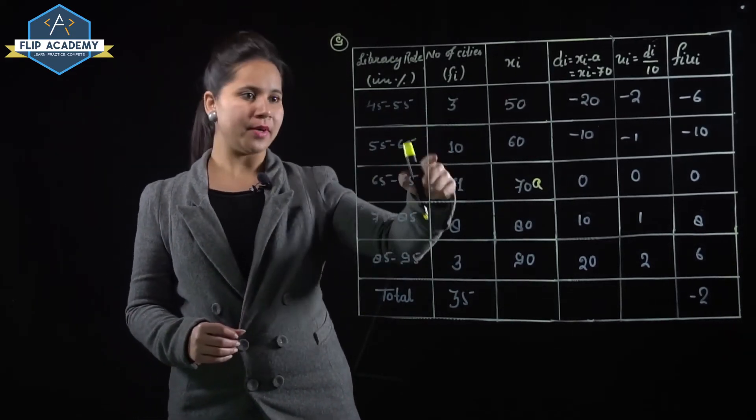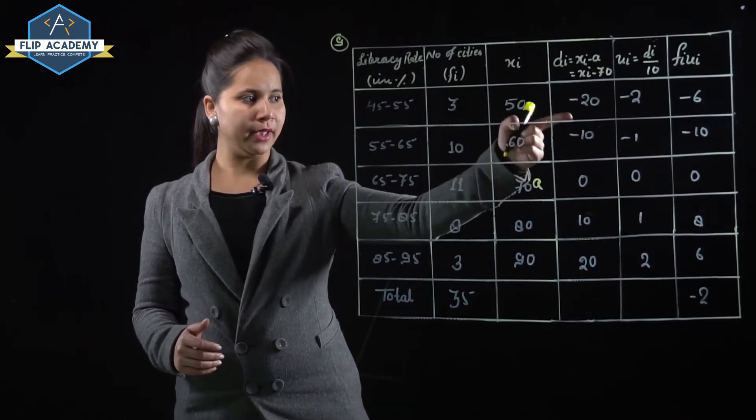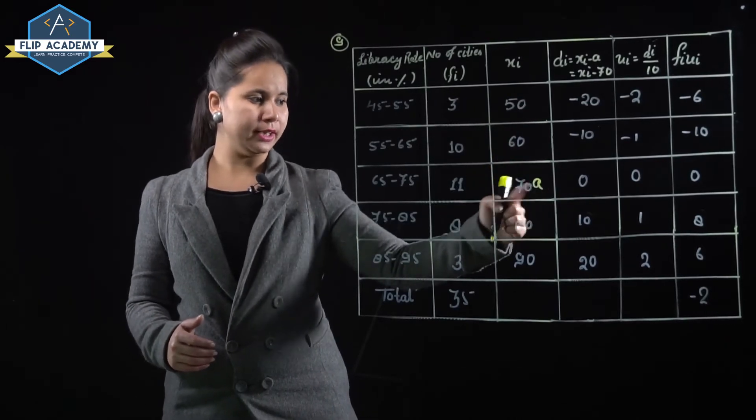Now ui into fi. Fi values are given, ui we found. It equals minus 6, minus 10, 0, 8, and 6.